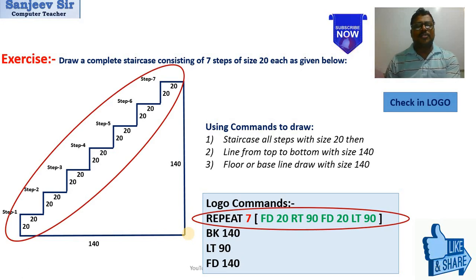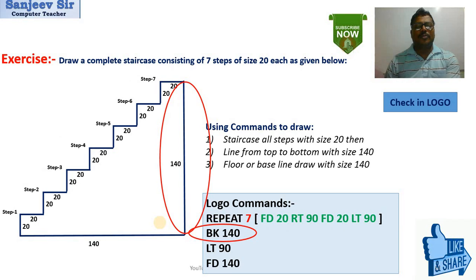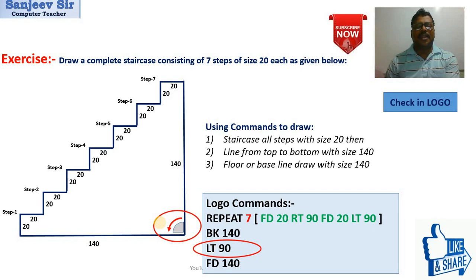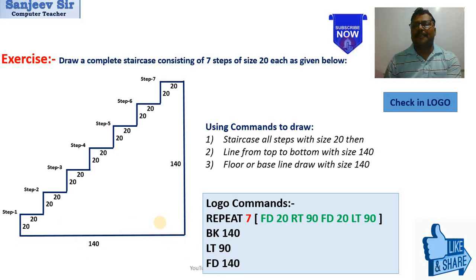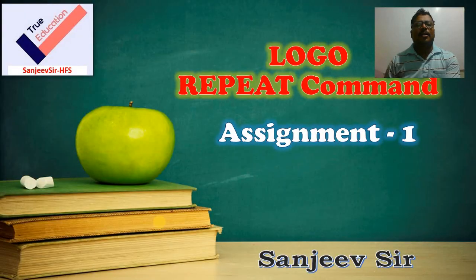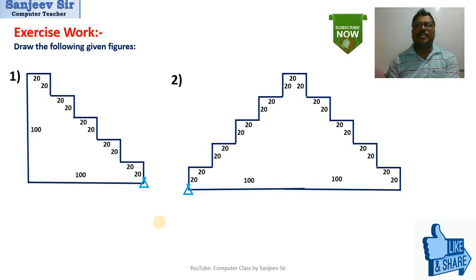The stair portion uses the repeat command. After that, we go back with BK, the turtle gets into position, then turns left to draw the baseline. In this way, the complete diagram or drawing is finished. I hope it is well understood. If you have any problem, you can write a comment or question. Now, next is the Logo repeat command assignment.